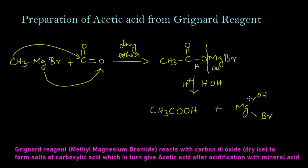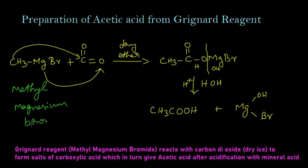Let's write the names for these structures. Methyl magnesium bromide, that is the Grignard reagent, reacts with dry ice — solid carbon dioxide. We get an intermediate, which on further acid hydrolysis gives acetic acid.